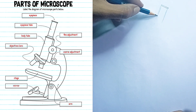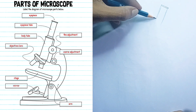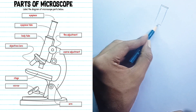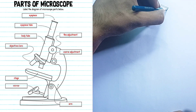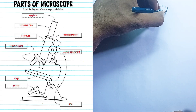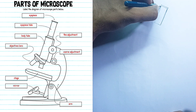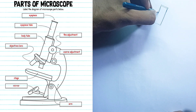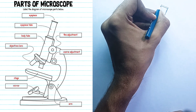Let me describe each of the labeled parts of the microscope shown in the diagram. Eyepiece, or ocular lens: this is the lens closest to your eye when you look through the microscope. Its primary function is to magnify the image produced by the objective lens, usually by 10x or 15x.